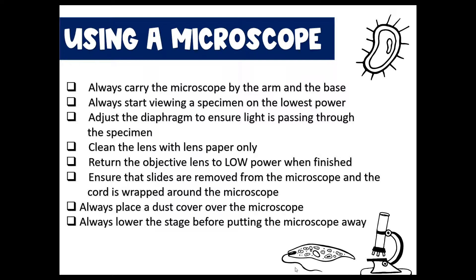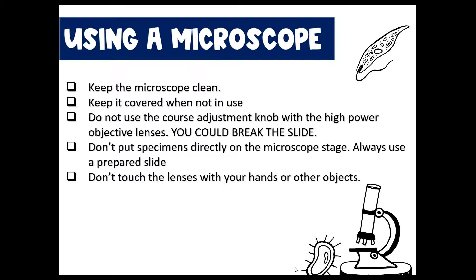Use a dust cover over the microscope when finished — this keeps it protected. Always lower the stage before putting the microscope away, using the coarse adjustment knob to turn the stage down as low as it will go. Keep the microscope clean; don't place any specimen on the stage without using a cover slip or microscope slide. Don't use the coarse adjustment knob with the high power objective lens. Don't put specimens directly on the stage, and don't touch the lenses with your hands or other objects.